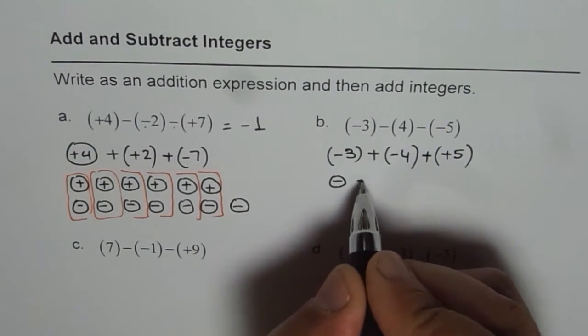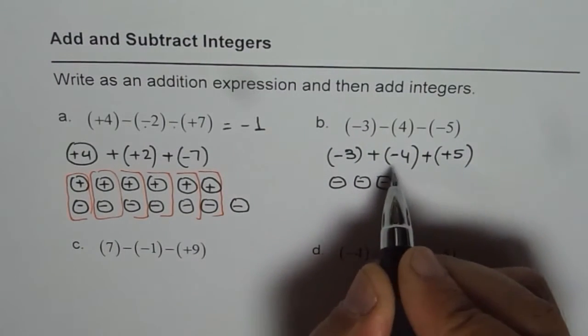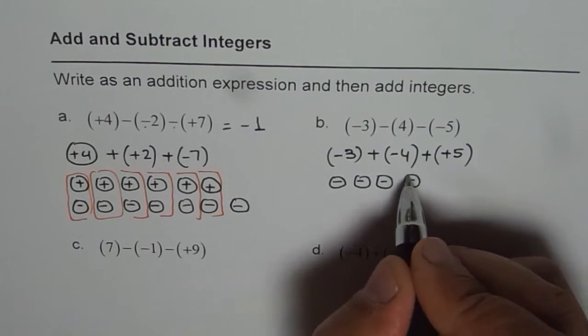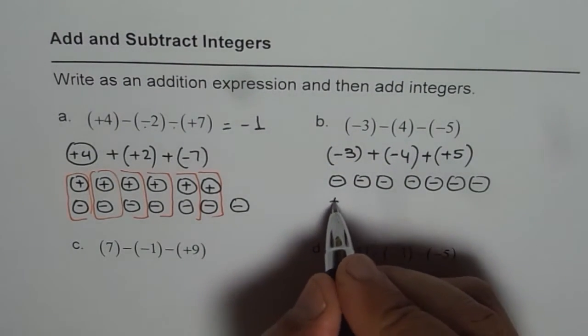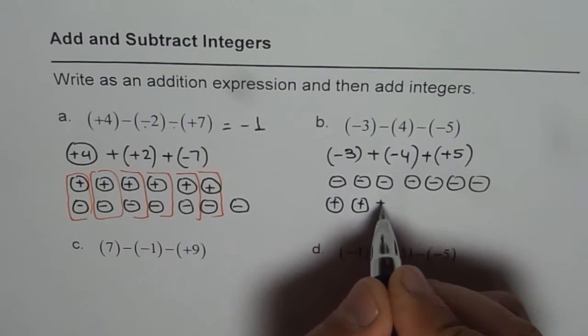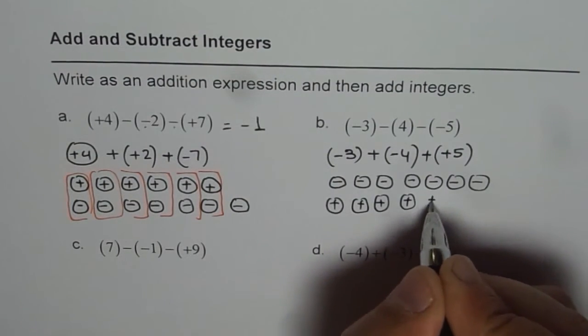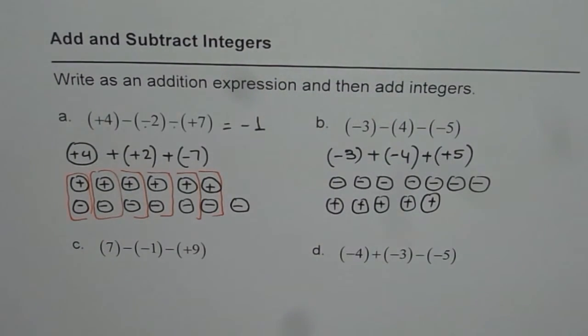Negative three: one, two, three. Negative four: one, two, three, four. Positive five: one, two, three, four and five. Now let us add them.